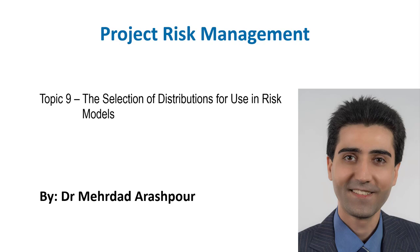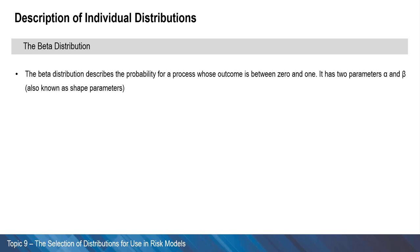We're going to continue our discussion of different distributions in this video. The beta distribution describes the probability for a process whose outcome is between 0 and 1. It has two parameters, alpha and beta, also known as shape parameters.